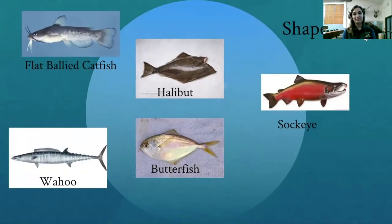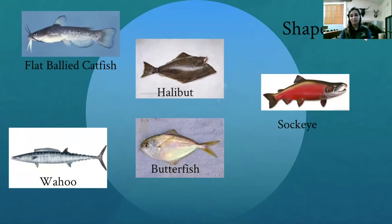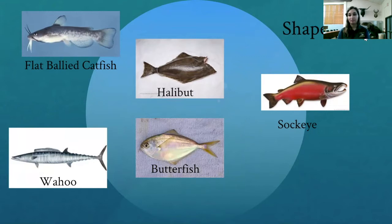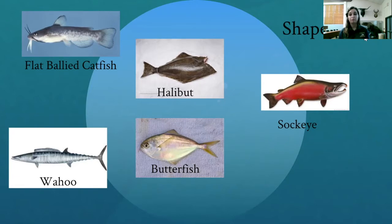Our next type of adaptation is shape. The different fish on this slide have different shapes including the torpedo shape, the vertical disc shape, the horizontal shape, the humpback shape, and the flat belly shape. For instance, we have a vertical disc fish which is able to see in different directions above various structures. And then we have our torpedo-shaped fish which is able to move very quickly through water, allowing it to escape from predators very fast.